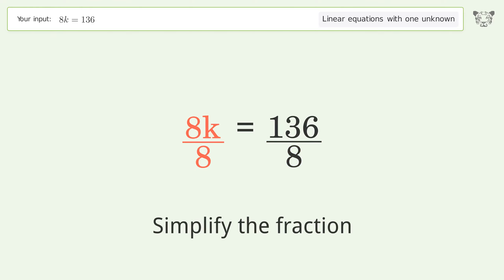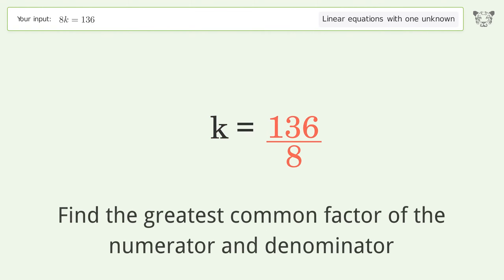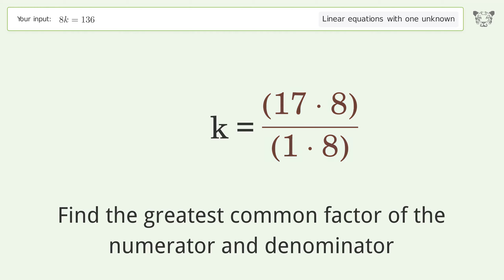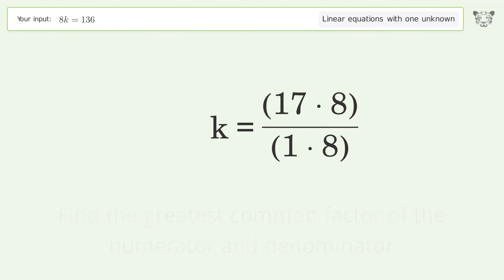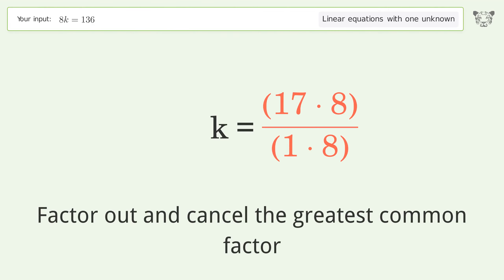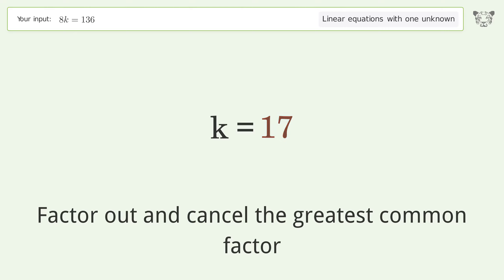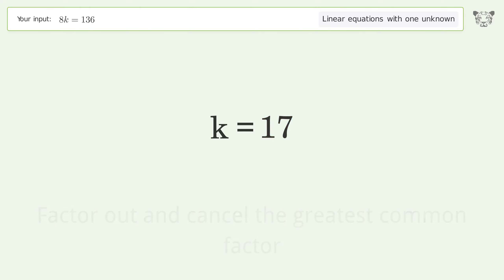Simplify the fraction by finding the greatest common factor of the numerator and denominator. Factor out and cancel the greatest common factor. The final result is k equals 17.